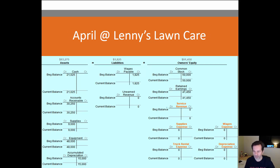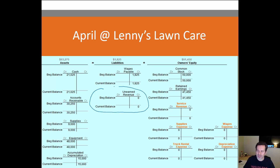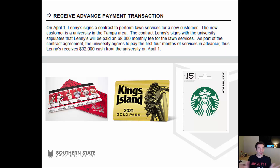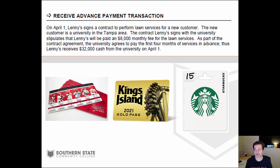We're in April with Lenny's Lawn Care, getting into the busy season. Looking at our general ledger, all the accounts look familiar, but we have one new one for April: unearned revenue. Just from its location in the ledger, you can already see it's a liability. On April 1st, Lenny signs a contract to perform lawn services for a university in the Tampa area, at an $8,000 monthly fee.